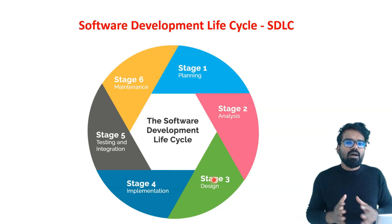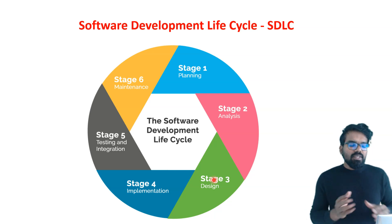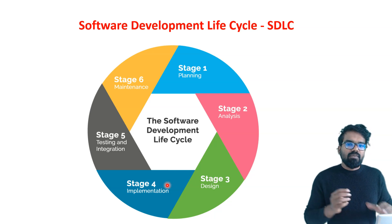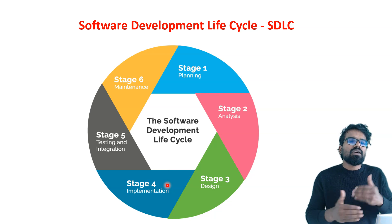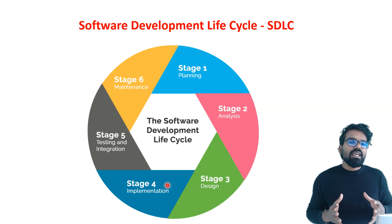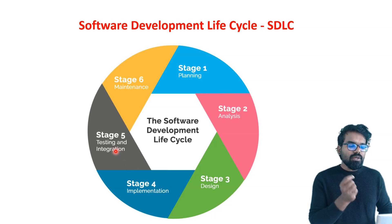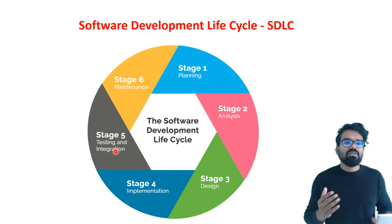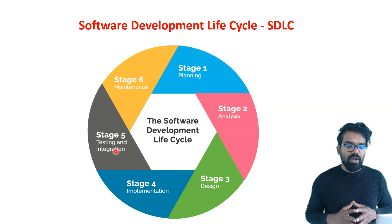Once all these are approved and we know what we are going to build, we start with the implementation stage, where the developers and the lead system architect will start building the applications. Let's say you build a minimum viable product. Then you can go to the fifth stage, where you can do the testing and integration with different systems and perform a lot of testing.